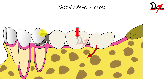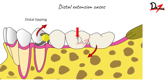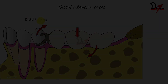Now when this happens, we have the clasp here and the rest here. There will be a force acting on this abutment tooth and there will be distal tipping of this tooth. So a force that was acting on the prosthesis is eventually harming the abutment tooth by distal tipping.